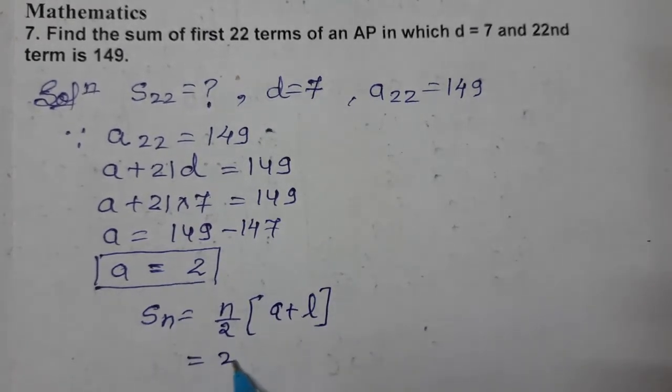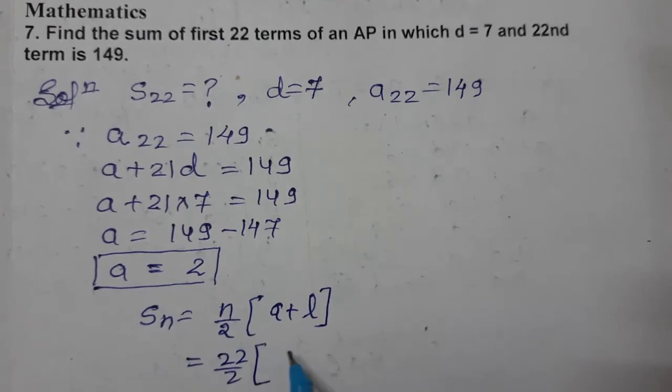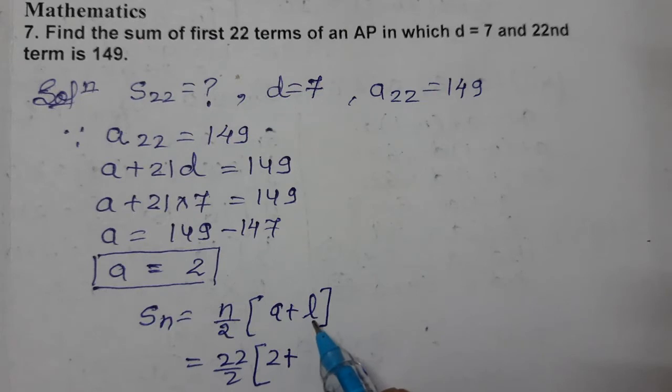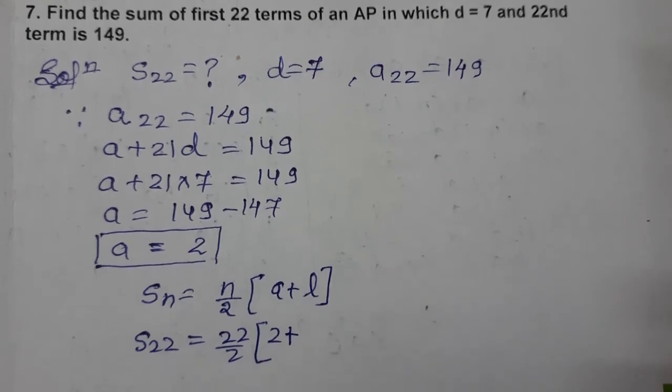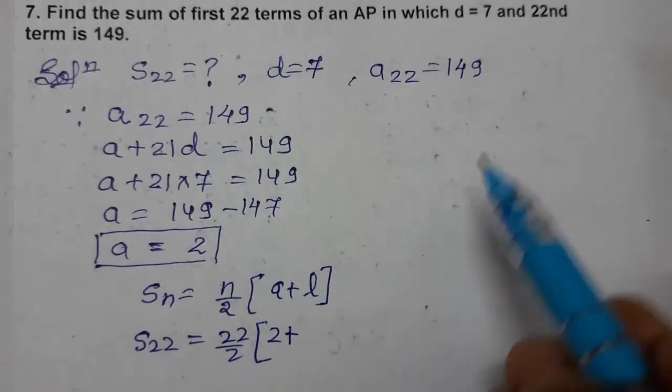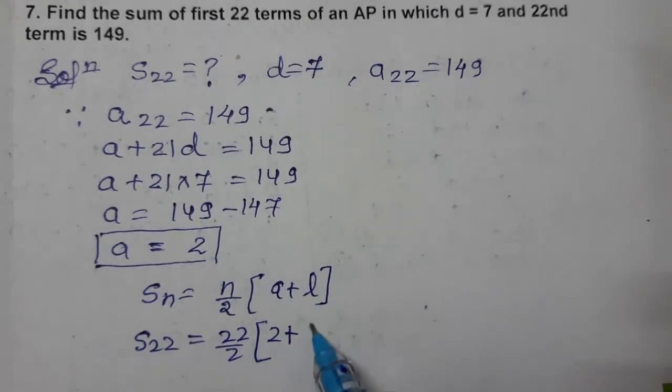The number of terms n = 22. First term a = 2, which we just found. Last term a₂₂ = 149, which was given. So for S₂₂, we have n = 22, first term 2, last term 149.